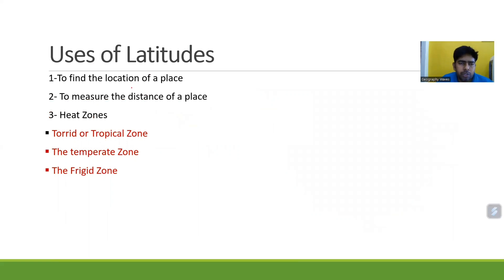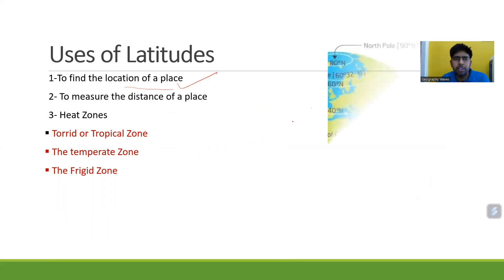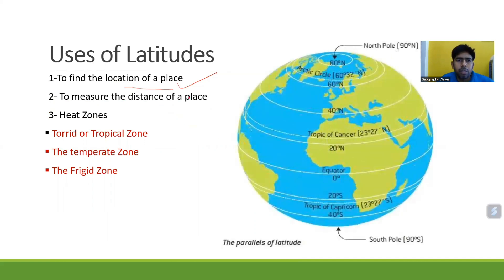Uses of latitudes. First is to find the location of a place - with the help of latitudes, we can find the location of any place. Second is to measure the distance of a place - we can easily measure a particular distance using latitudes.